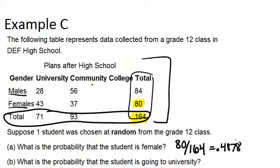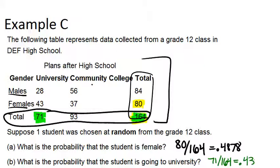Part B asks: what is the probability that the student is going to university? The total is still 164, and the total number of people going to university is 71. So the probability is 71 out of 164, which is approximately 0.4329.